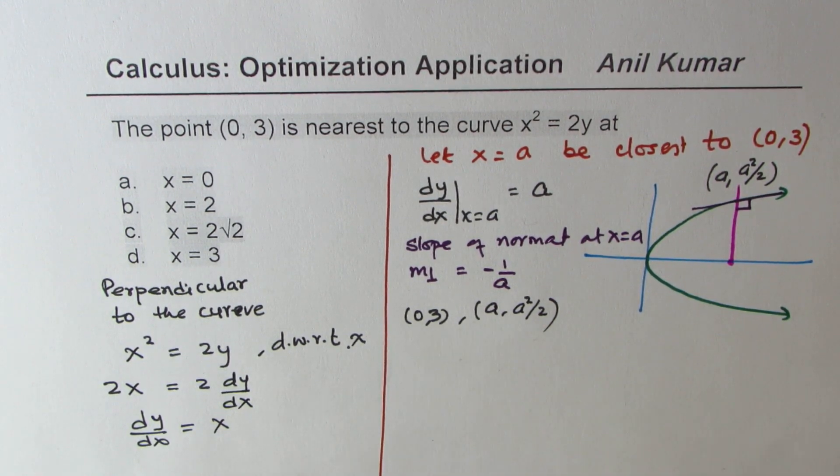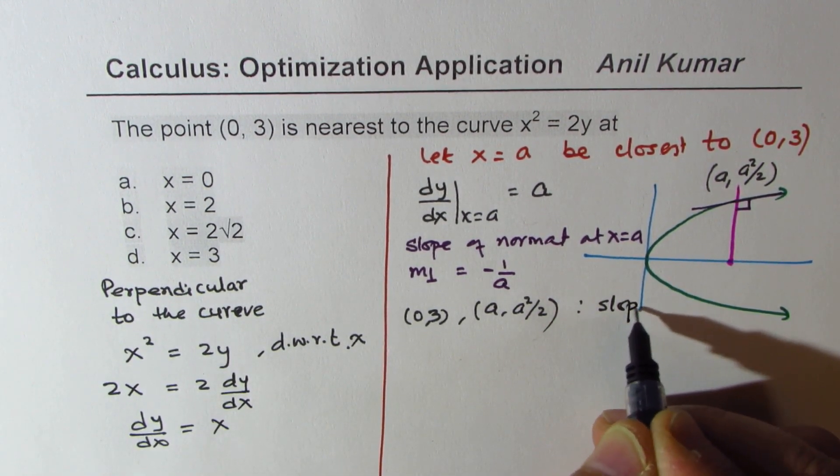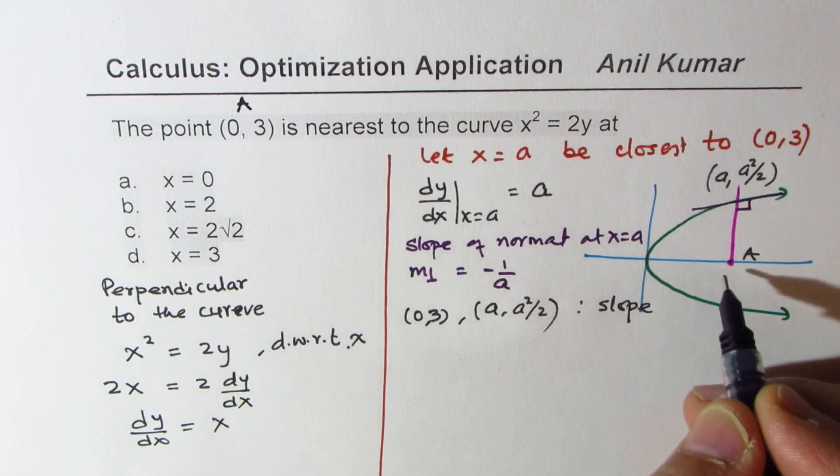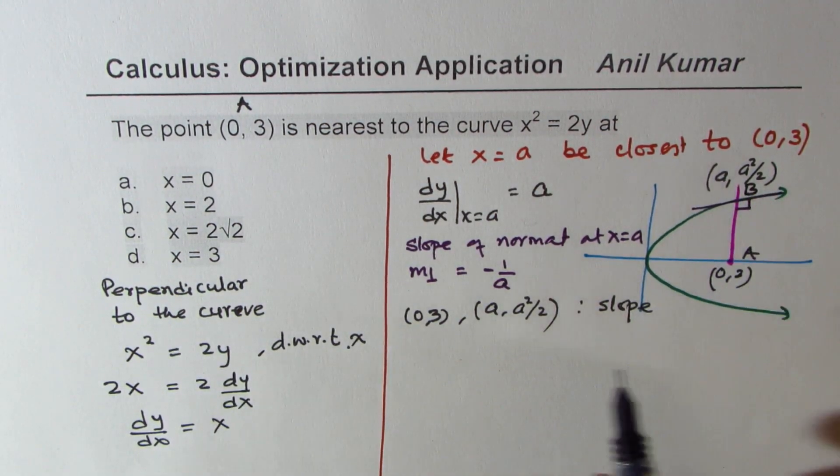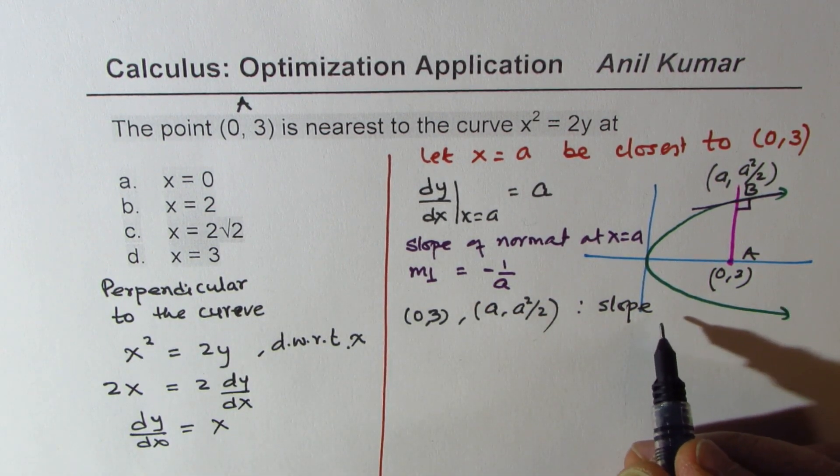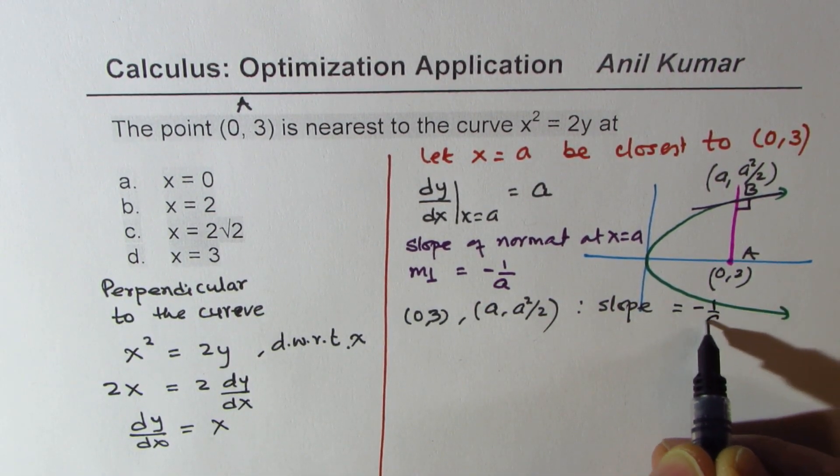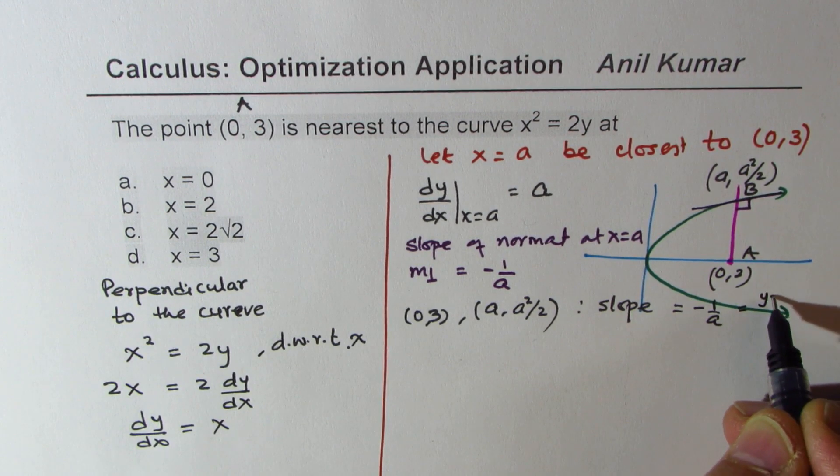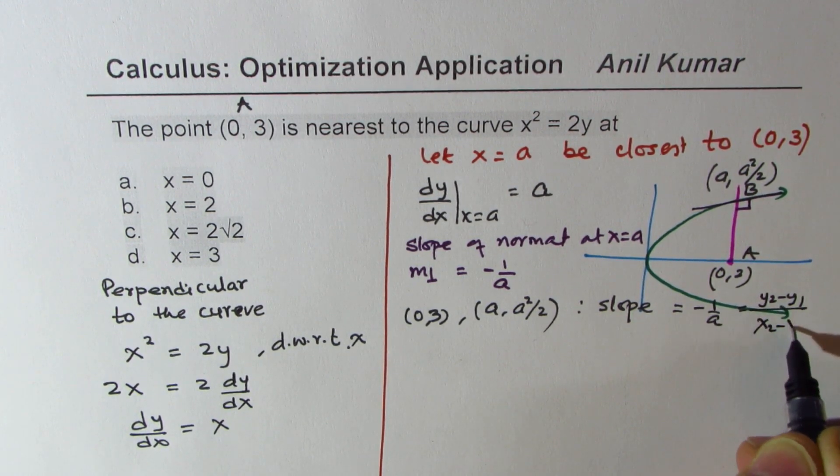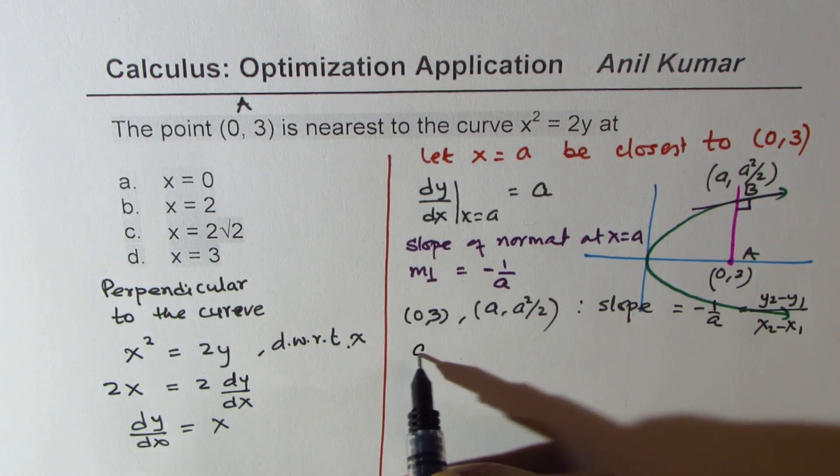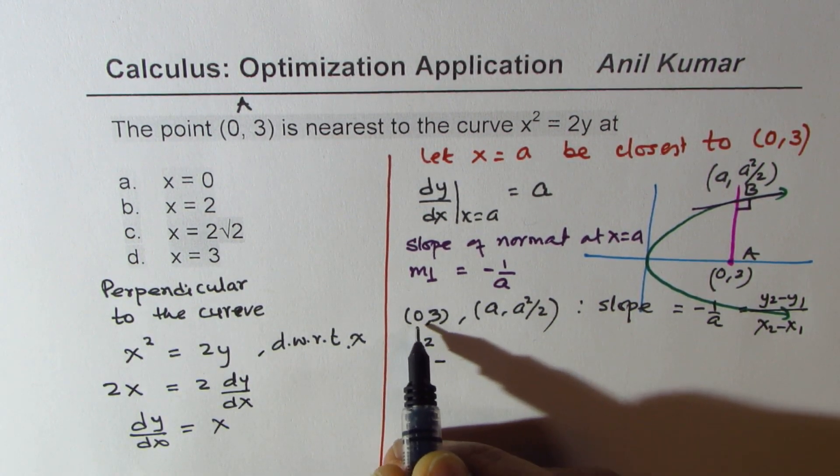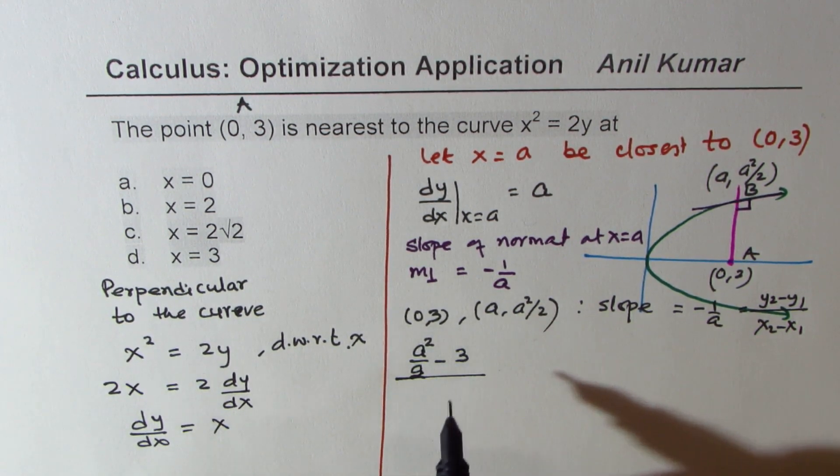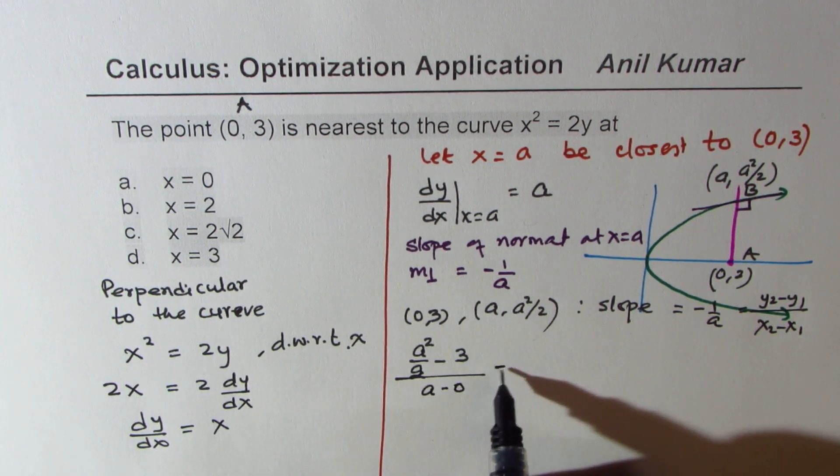So what is the slope between these two points? One point, let's call point A, is (0, 3), and let's call this point B. The slope should be equal to -1/a. Now slope is (y₂ - y₁)/(x₂ - x₁). So from here we get (a²/2 - 3)/(a - 0) = -1/a.